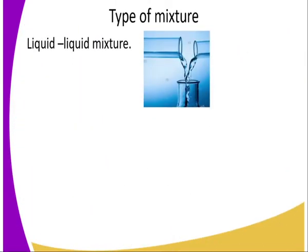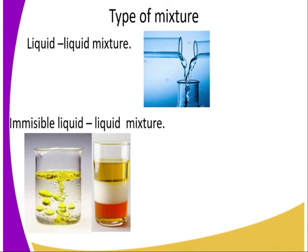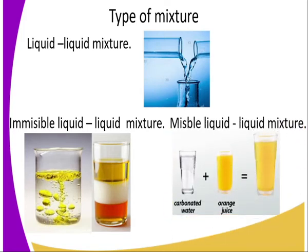The last classification, number six, is liquid-liquid mixture. In a liquid-liquid mixture we have two types: immiscible liquid mixture, where the two liquids do not mix together and form an interface — a very good example is oil and water. We also have miscible liquid-liquid mixture; good examples include carbonated water, orange juice, milk and water, and water and ethanol.